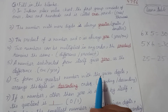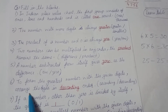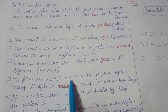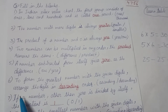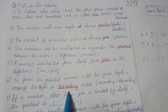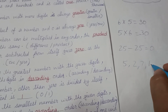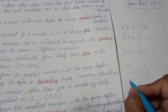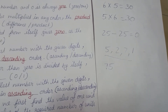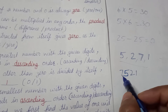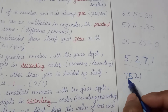To form the greatest number with the given digits, we arrange the digits in descending order. For example, to make the greatest number from four given digits, we write the bigger digit first and arrange them in descending order. That gives us the greatest number.